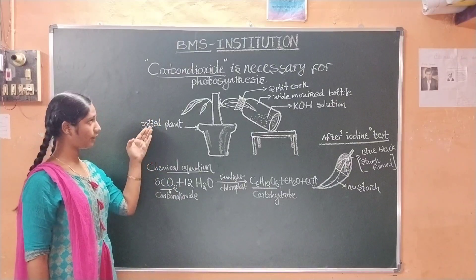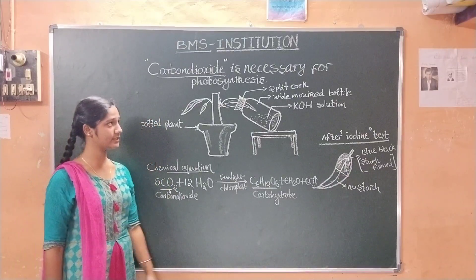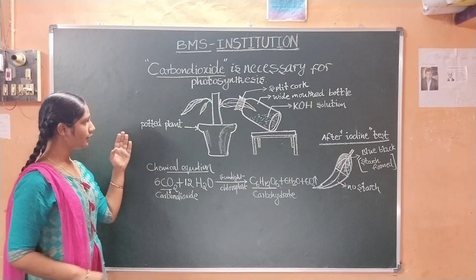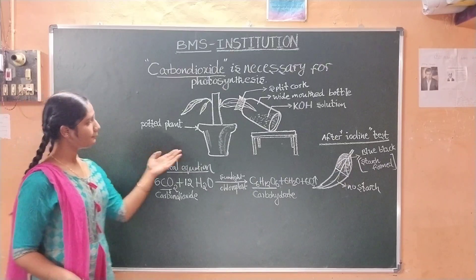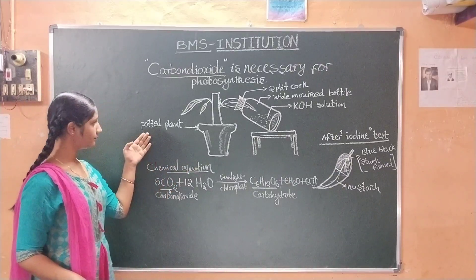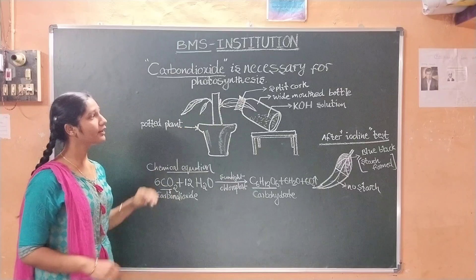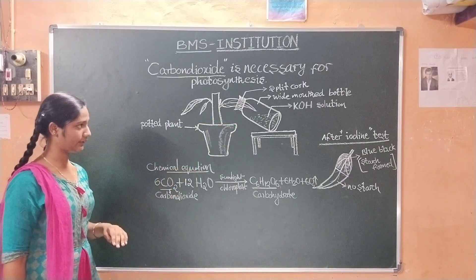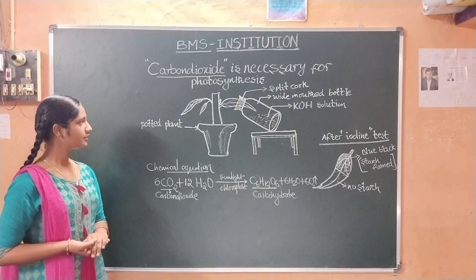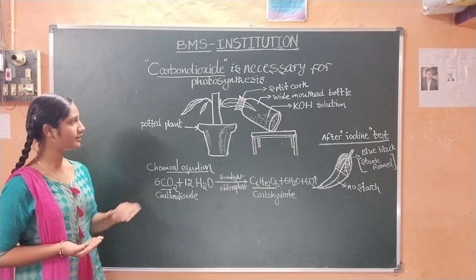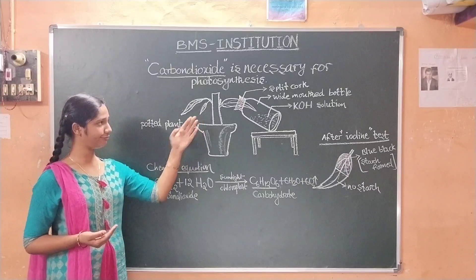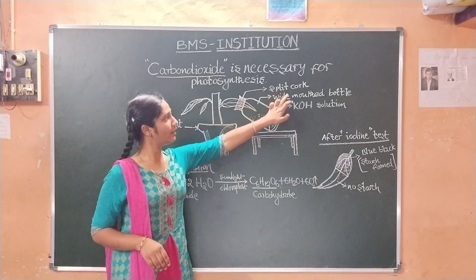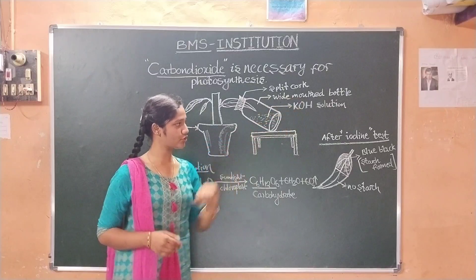Our aim today is to show that carbon dioxide is necessary for photosynthesis reaction. What are the apparatus or materials required to do this experiment? That is a potted plant, a split cork, a wide-mouthed bottle, KOH solution, and some other materials. We need a long-leaved potted plant, a split cork, a wide-mouthed bottle, and KOH solution.